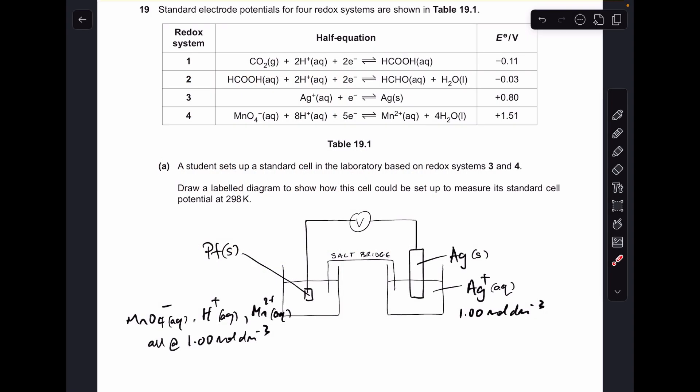Okay, so make a start. So the drawing of the cell, it wants it for systems 3 and 4. I've gone for the manganate one on the left-hand side. In this beaker, we need solutions of MnO4-, don't forget the H-plus ions, and we also need Mn2+ ions in there, and they're all at 1 mole per decimeter cubed.